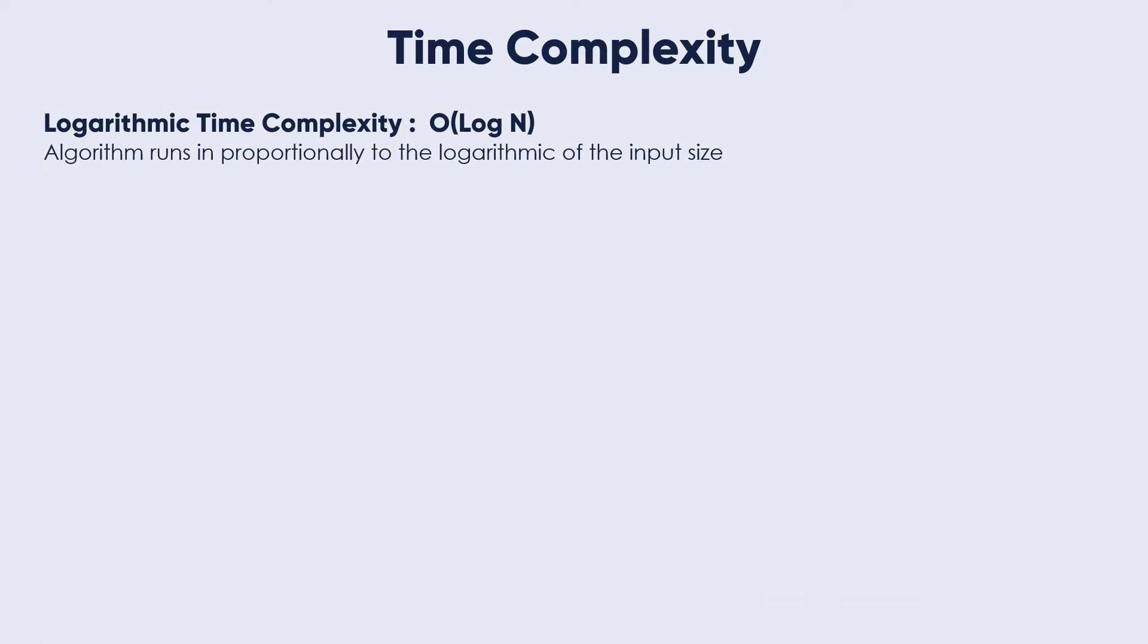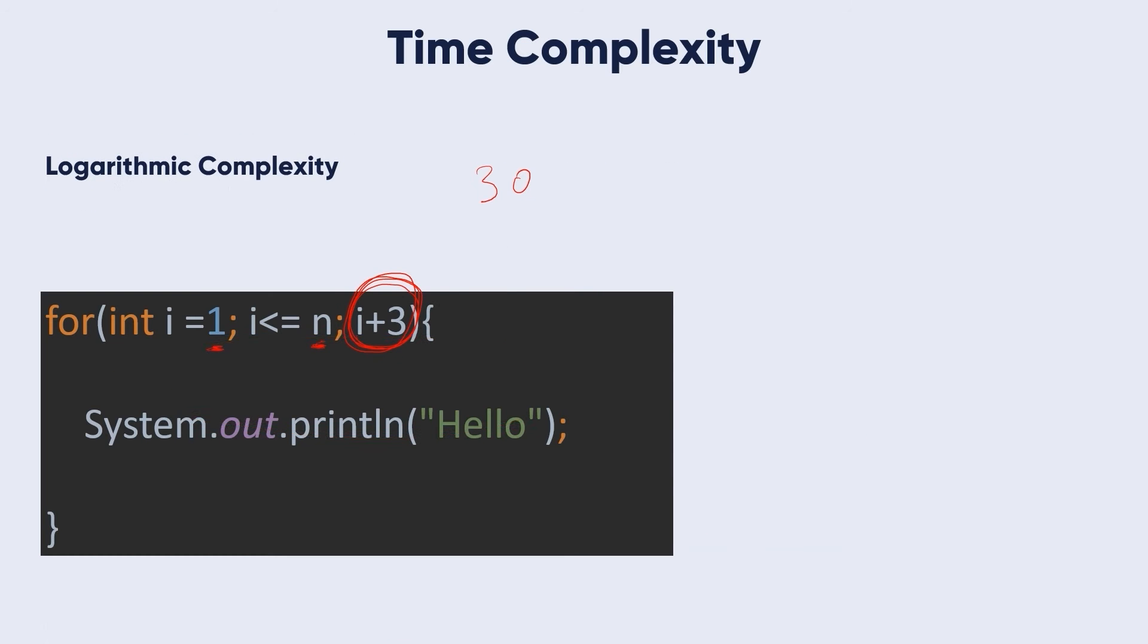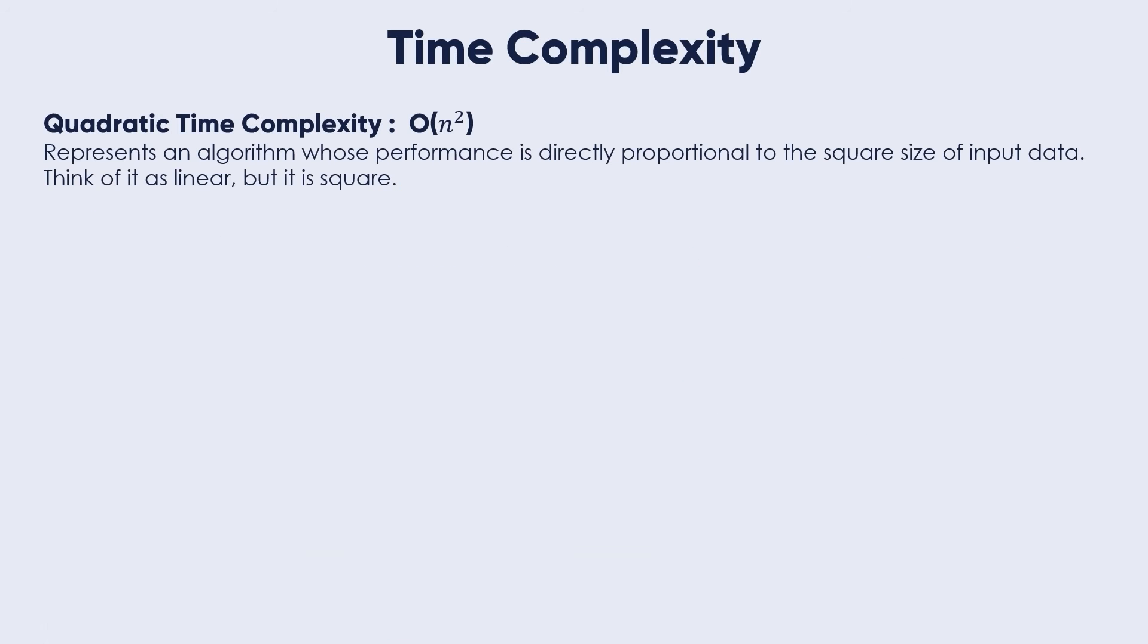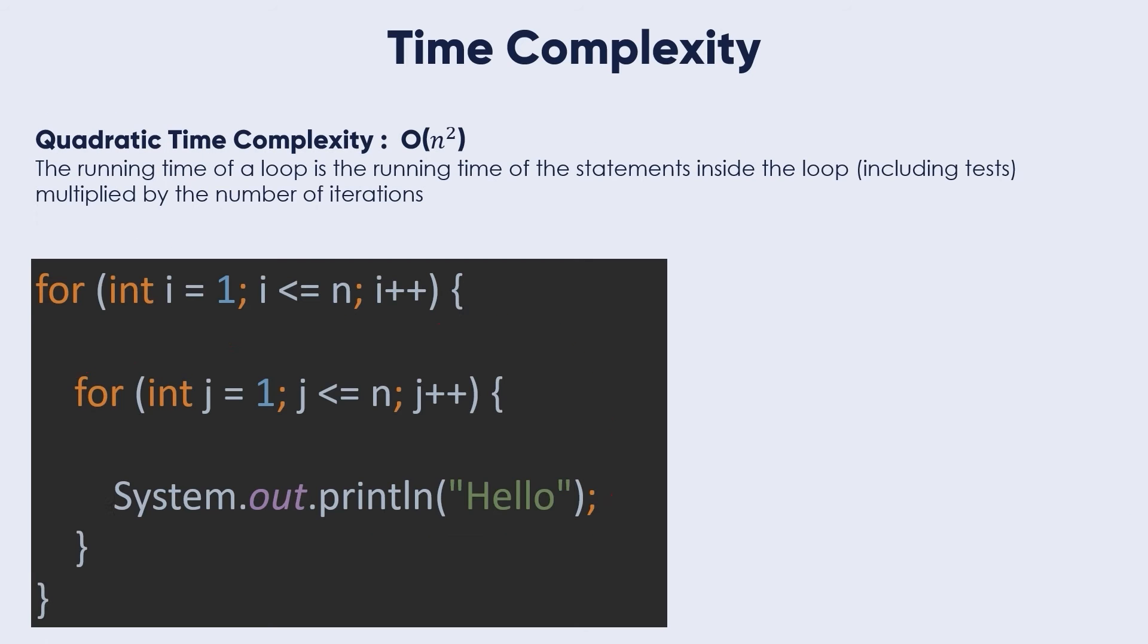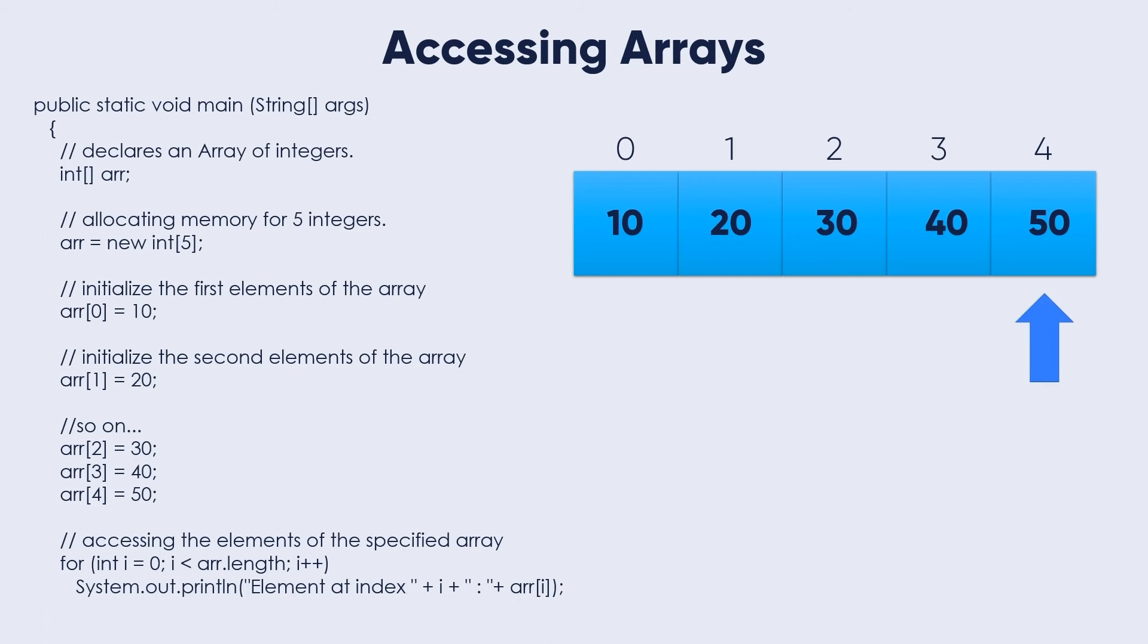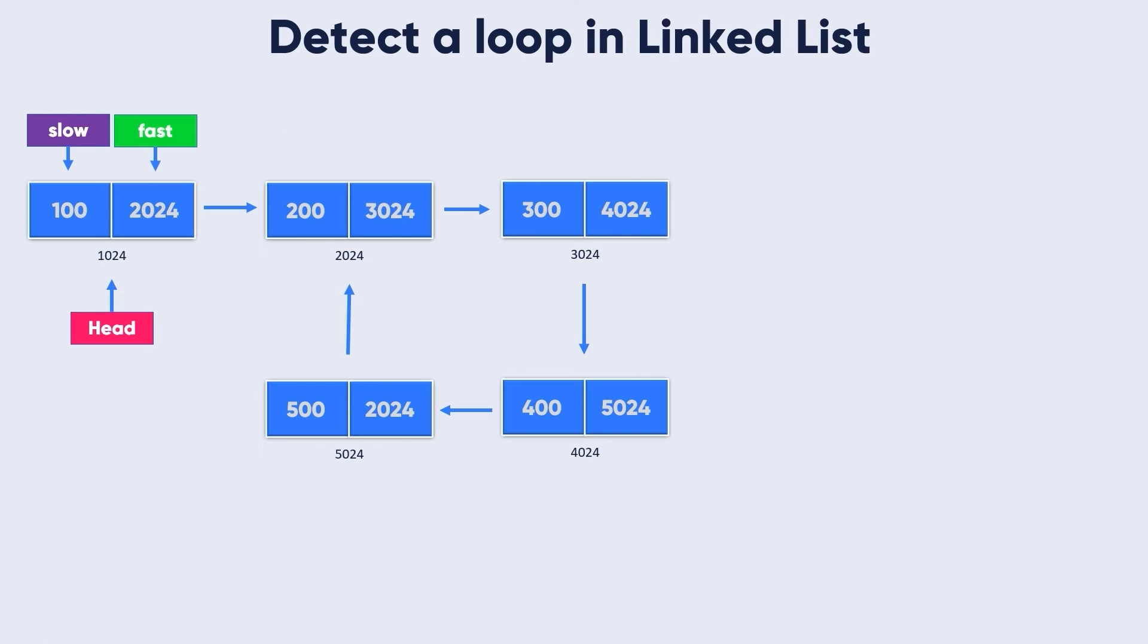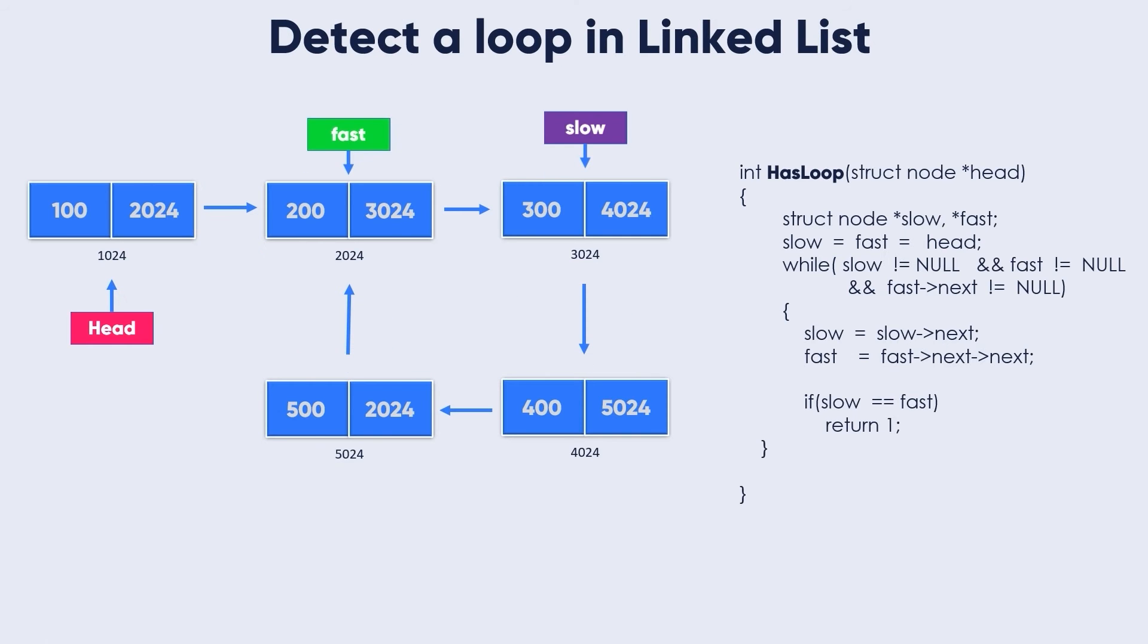This course is actually two courses built into one. The first course is Data Structure, that you will master different data structures like Arrays, Matrix, Linked Lists, Circular Linked List, Doubly Linked List, and Queue.